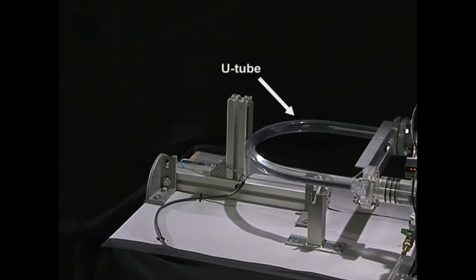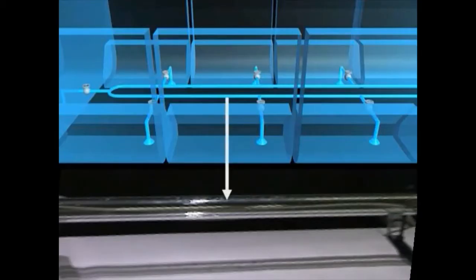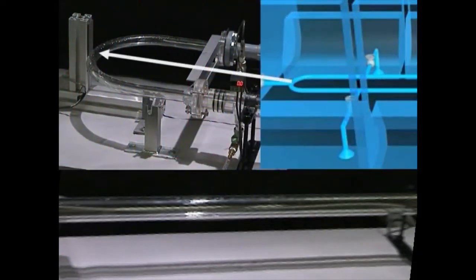We observe the behavior of the U-tube attached to the pipe outlet. The acrylic pipe corresponds to the ship's pipeline. The U-tube corresponds to curved sections and pipeline dresser.